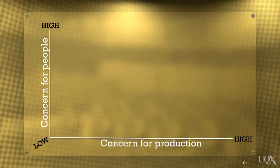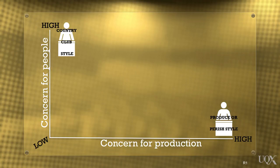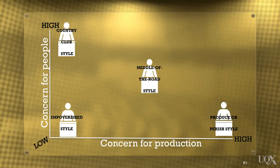A unit with high concern for people and low concern for production is deemed to be the country club style. At the other end of the scale, with low concern for people but high concern for production, is the produce or perish style. We also have the impoverished style, the middle of the road style, and with a high concern for both people and production — the ideal — the team style.